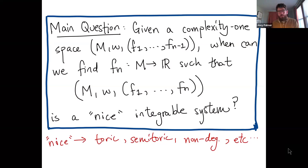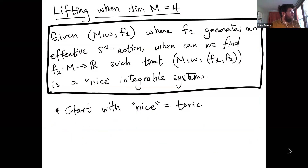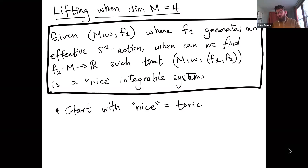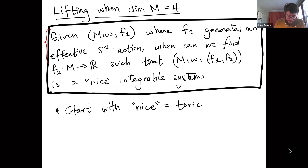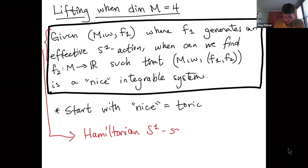I'll start with the simplest case: when the dimension of M equals four. A complexity one space in dimension four is a single function generating an effective S^1 action, and we're asking when we can find another function to end up with a nice integrable system. An effective Hamiltonian S^1 action on a symplectic four-manifold is called a Hamiltonian S^1 space.